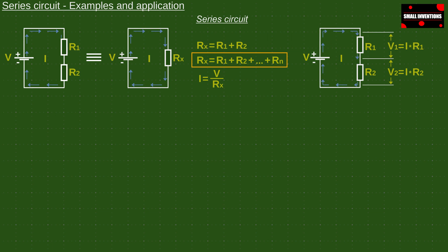You can always easily check that you have calculated everything well because in the end you add up the individual voltages on the resistors, in our case V1 and V2, and you get the amount of supply voltage.